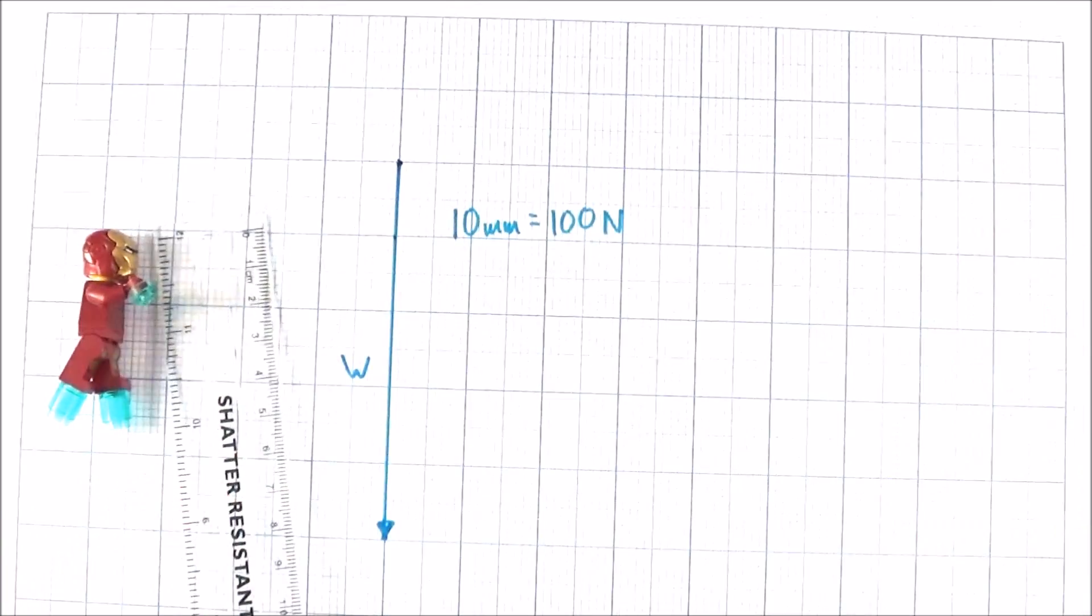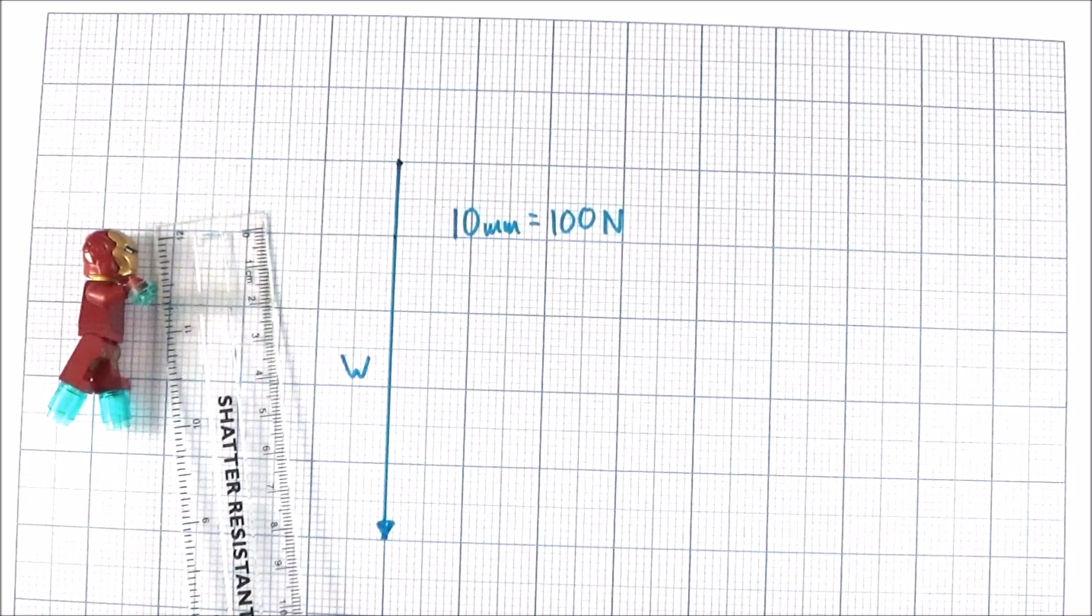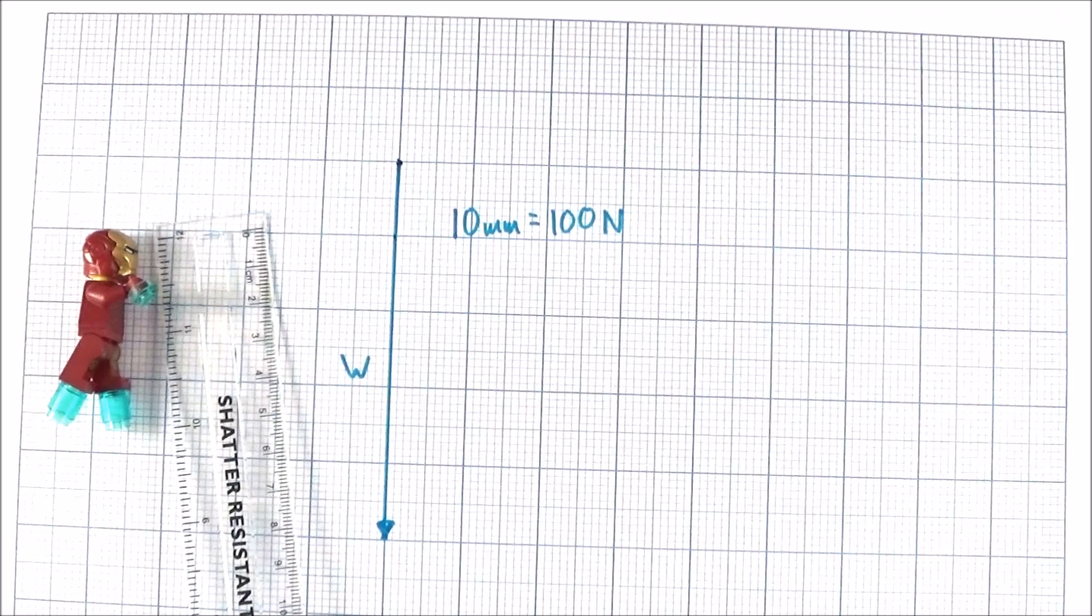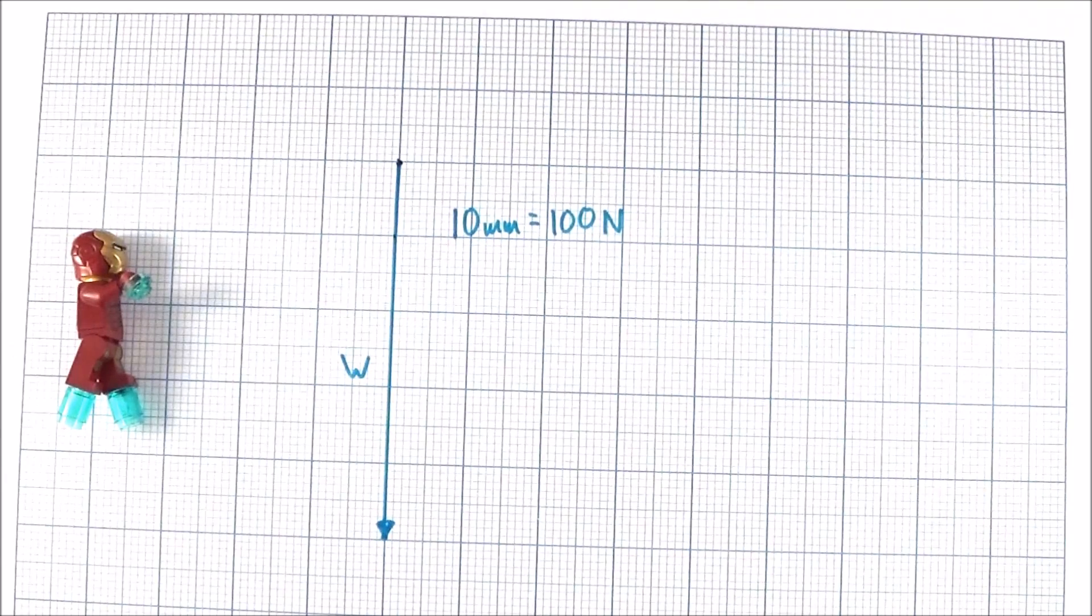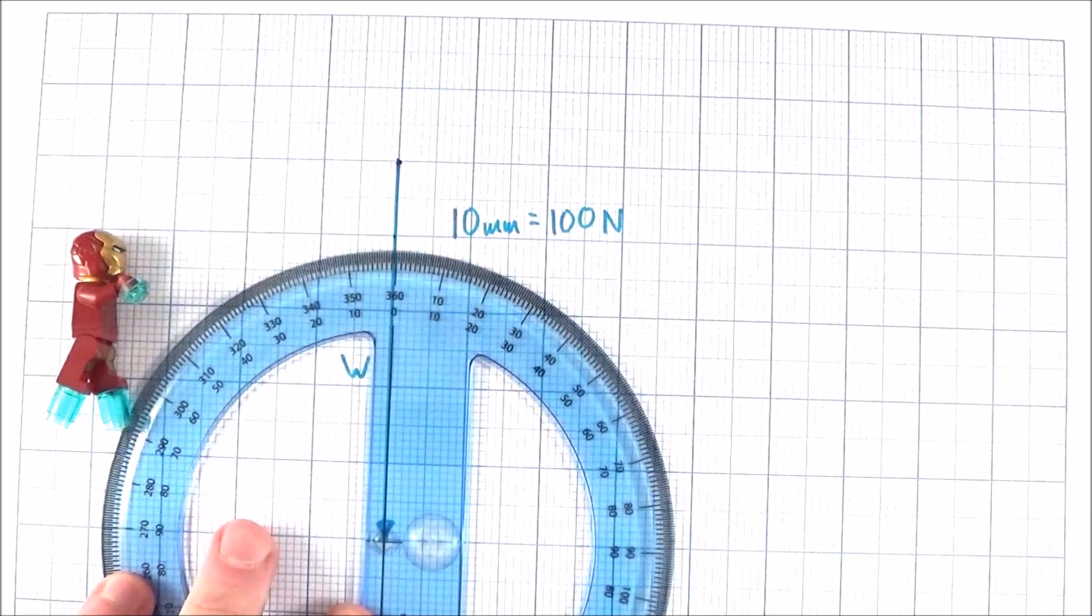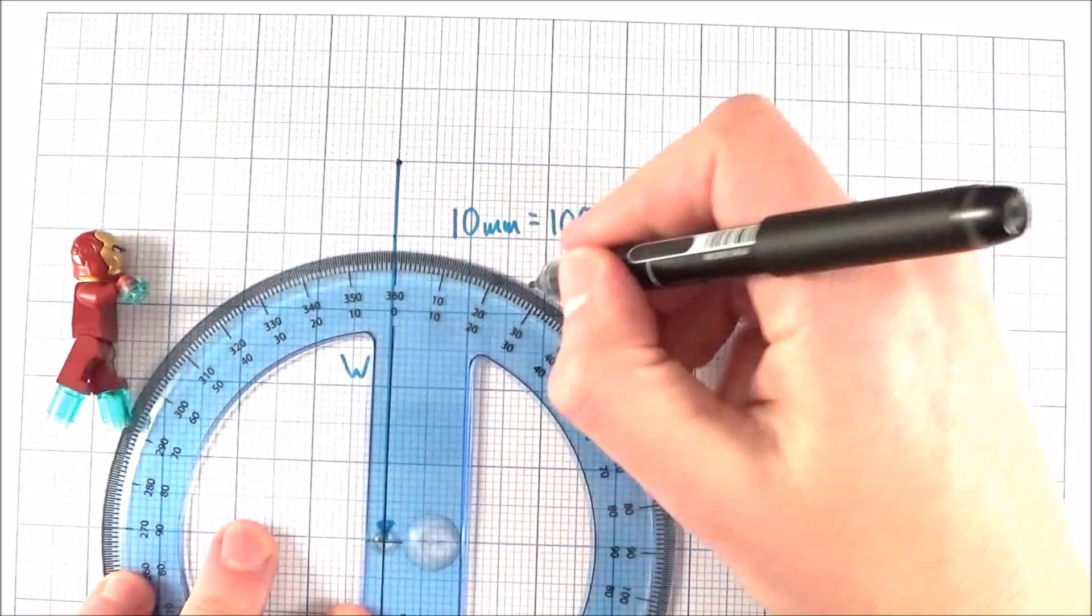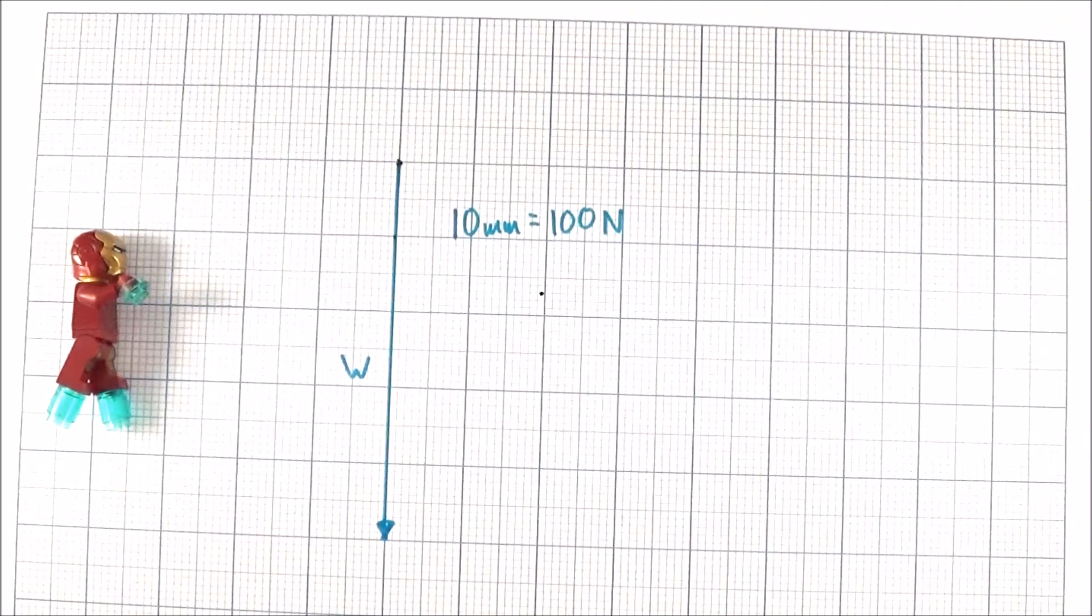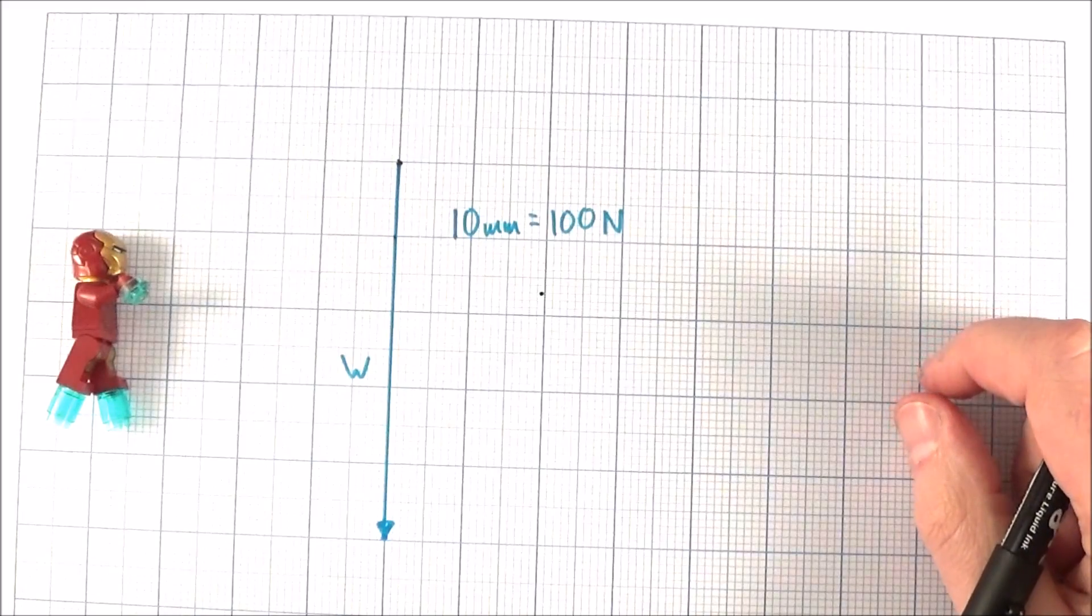And this was the weight force. Now in the original example perhaps we had an angle of 30 degrees and there was a force of 1500 newtons. So this means using the protractor I'm going to measure out my angle of 30 degrees, and I'm going to draw in a line that should be 15 centimeters or 150 millimeters long.